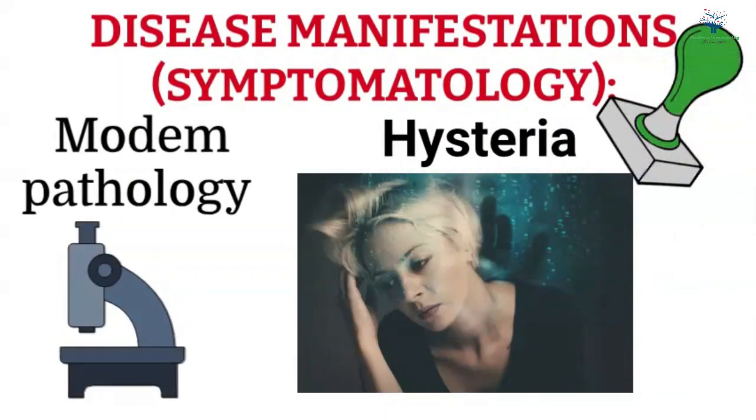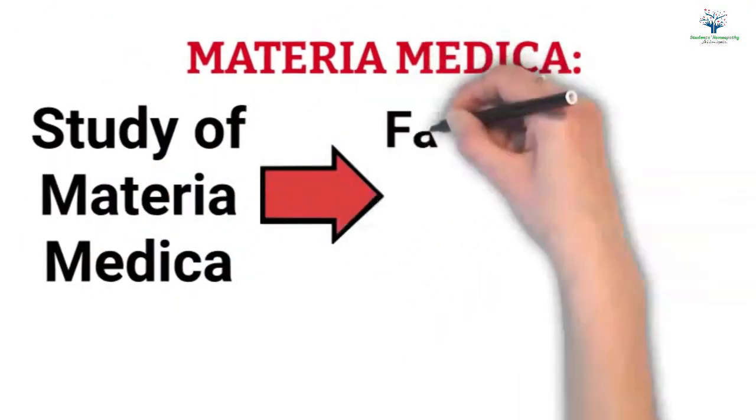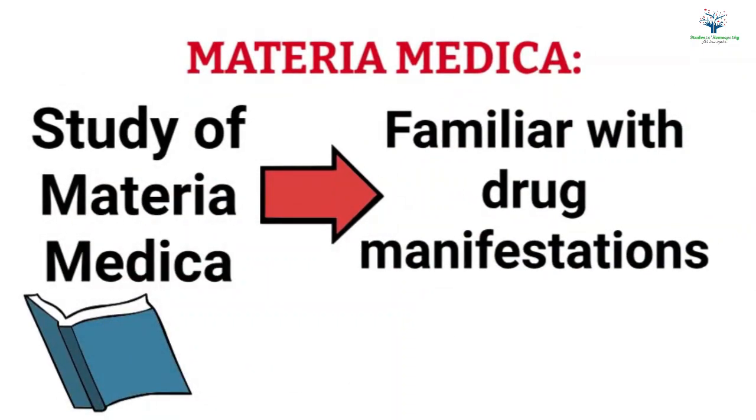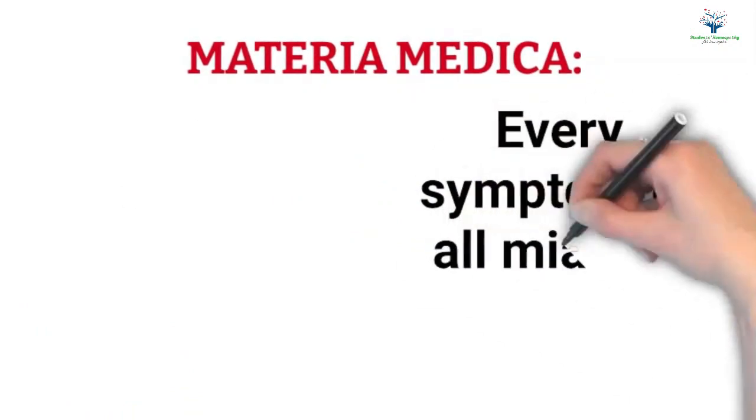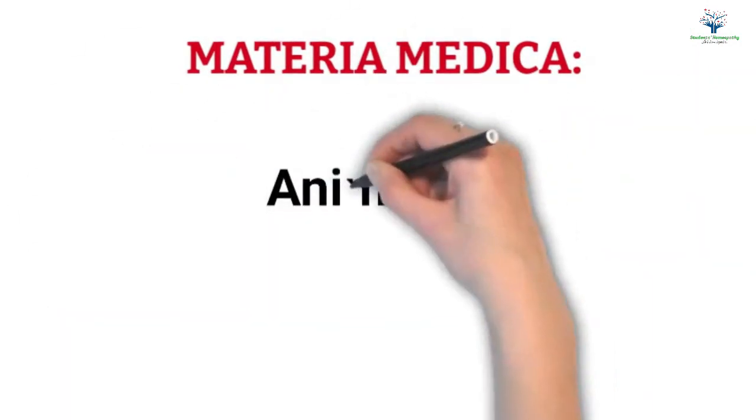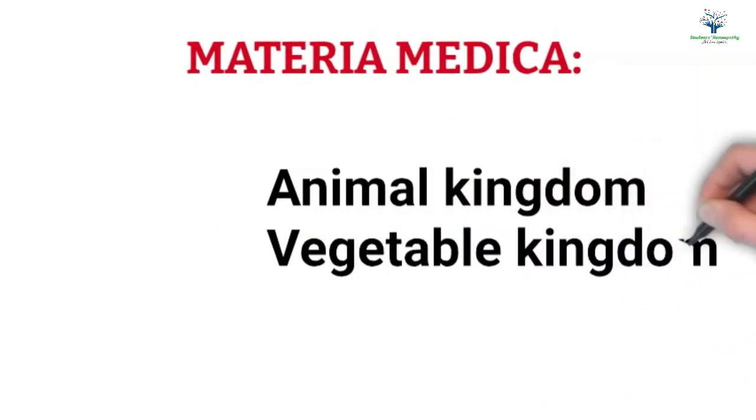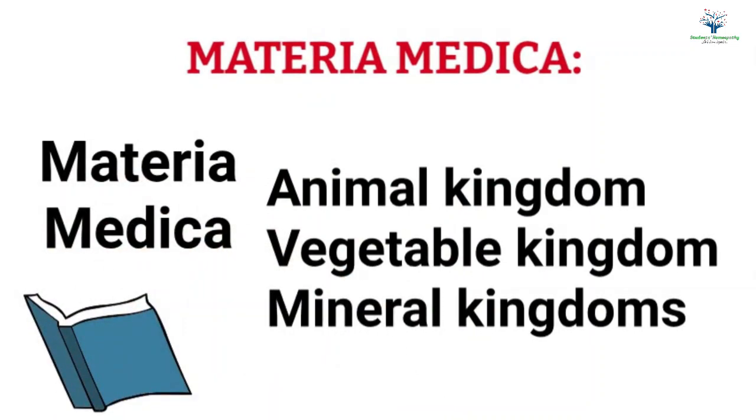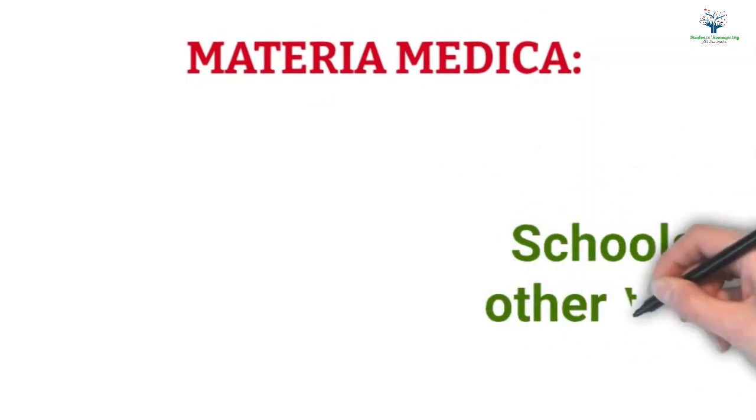Now coming to the drug manifestation, he tells one can be familiar with drug manifestation by studying materia medica. Every symptom of all the miasms are found in materia medica. Thus according to Dr. Kent, being thorough with the materia medica of animal, vegetable, and mineral kingdoms one can treat the whole human race.